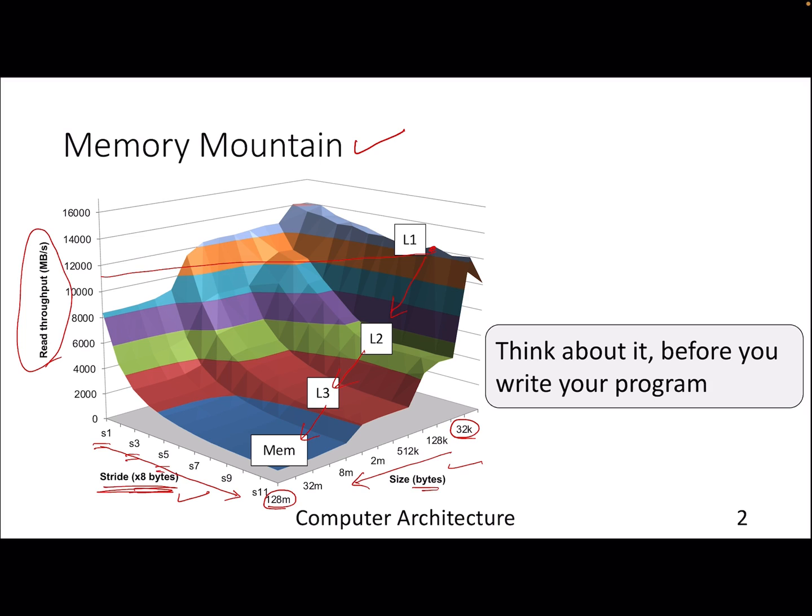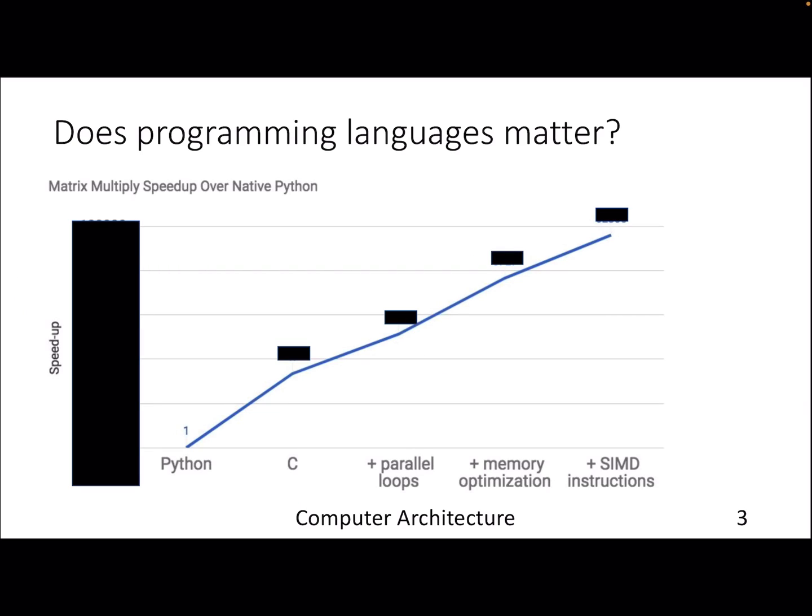Remember if your cache is having a block size of 32 bytes or 64 bytes, suddenly you'll start seeing a dip after 32 byte or 64 byte boundary. That will also affect your throughput. You can actually think about all these various parameters or norms that can affect your program before you write your next program. So that's the goal of this particular plot.